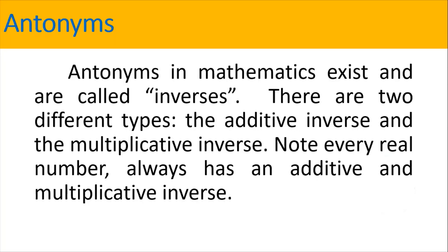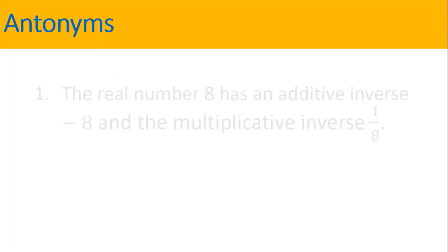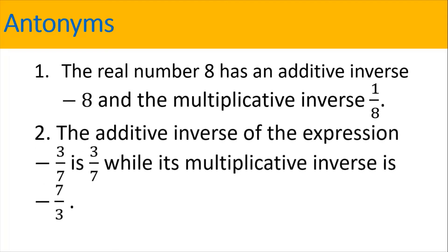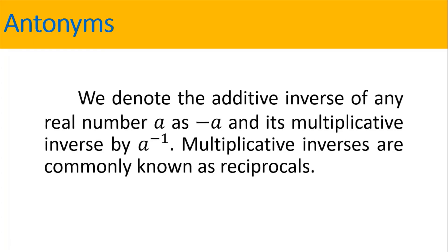Antonyms in mathematics exist and are called inverses. There are two different types, the additive inverse and the multiplicative inverse. Note, every real number always has an additive and multiplicative inverse. The real number 8 has an additive inverse, which is negative 8, and its multiplicative inverse is 1 over 8. The additive inverse of the expression negative 3 over 7 is positive 3 over 7, while its multiplicative inverse is negative 7 over 3. We denote the additive inverse of any real number a as negative a, and its multiplicative inverse by a to the negative 1.